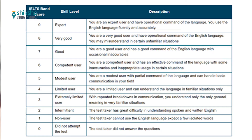A score of 2 means you are an intermittent user of English and have great difficulty understanding both spoken and written English. A score of 1 means you are a non-user and cannot use the English language except for a few isolated words. A score of 0 simply means the test taker did not answer any question in the exam.